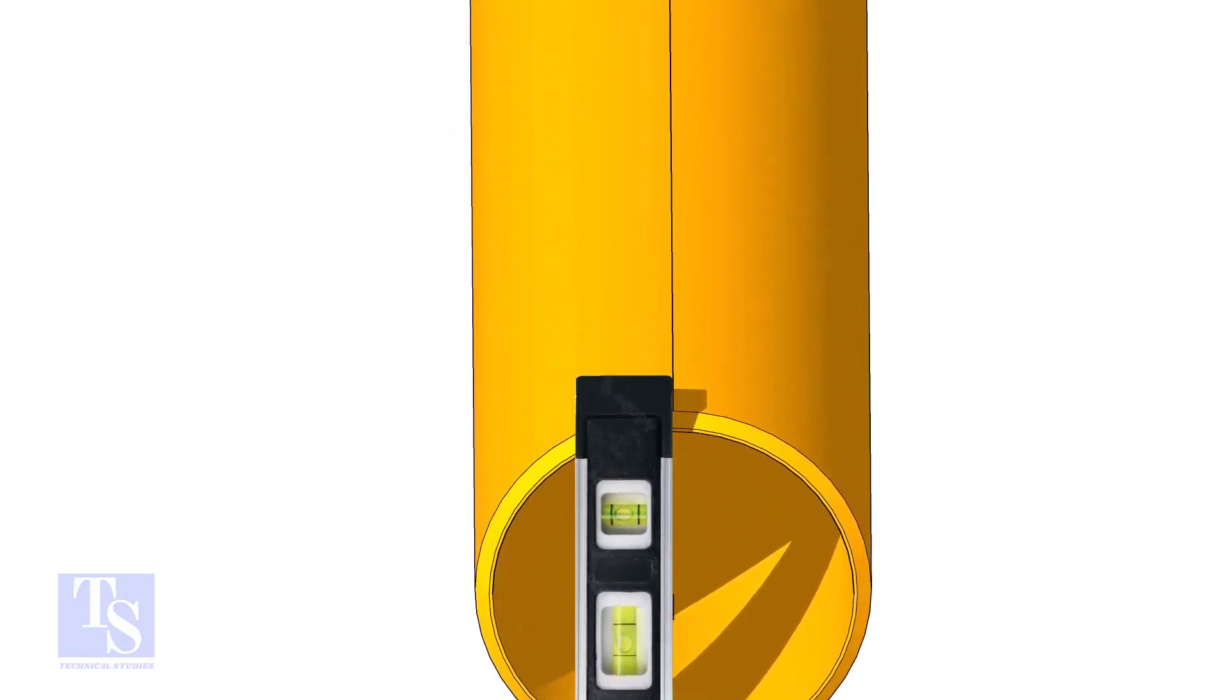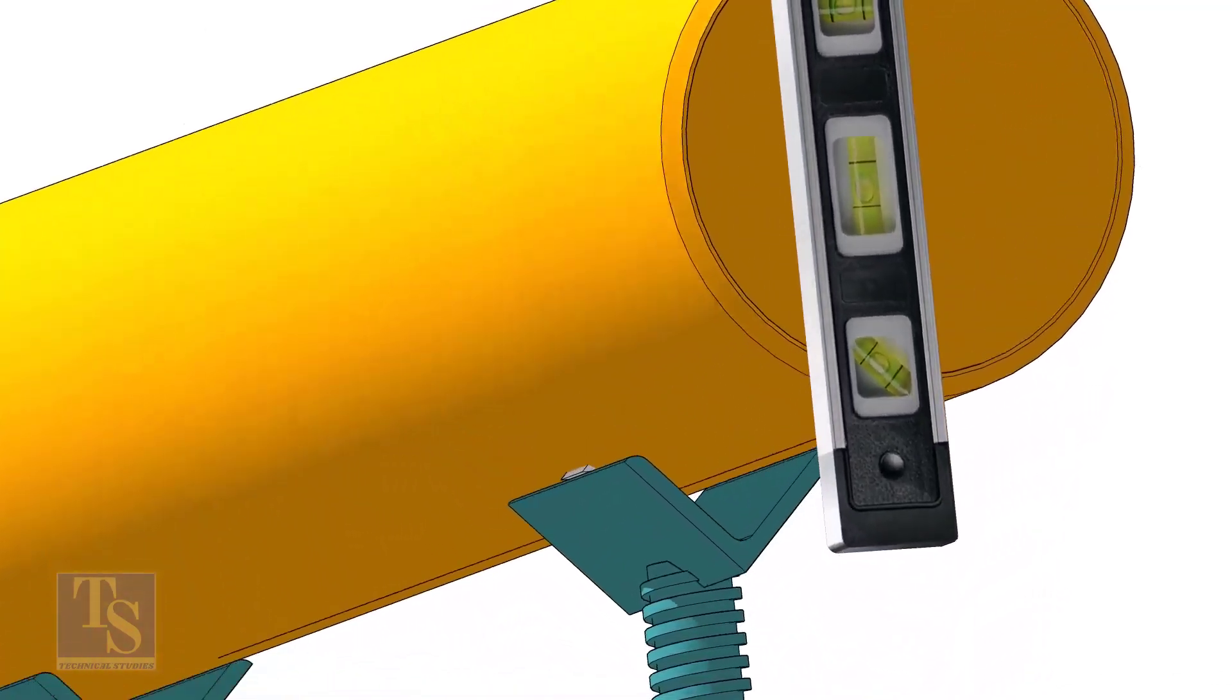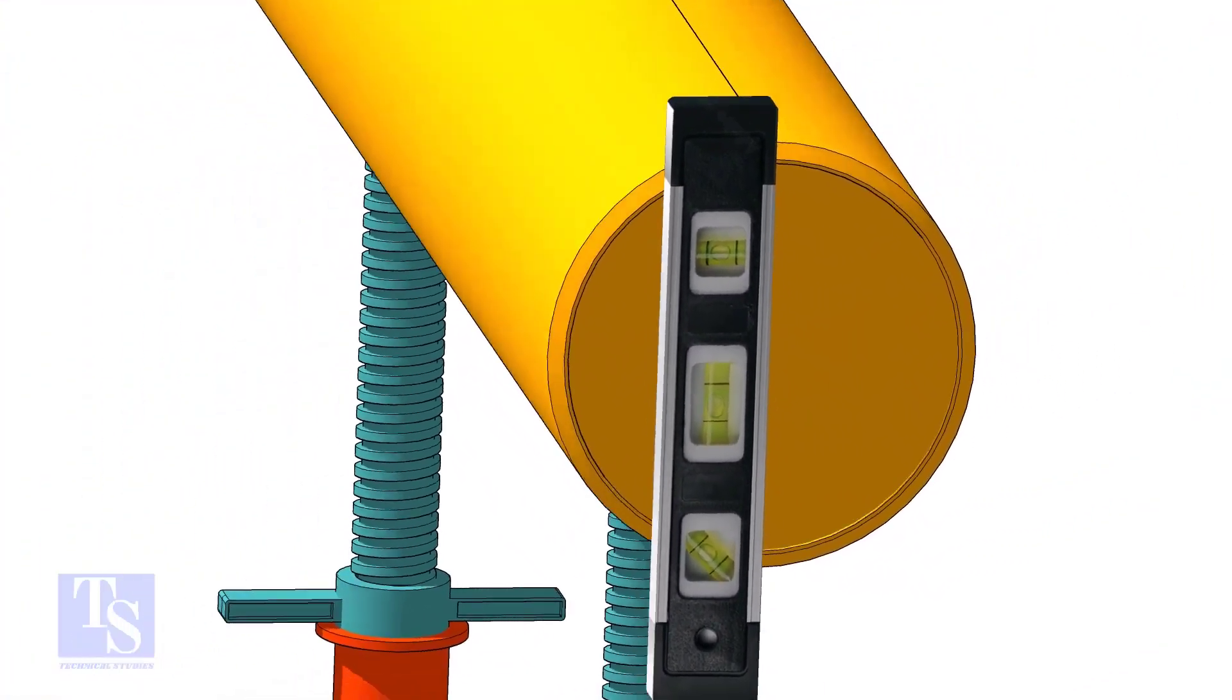Level the pipe horizontally and vertically as shown. After leveling, arrest the pipe to stop it from rotating.